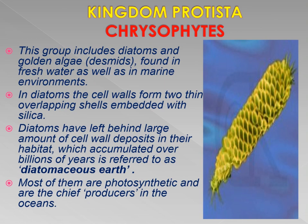The first type is chrysophytes, which is a group of organisms that includes diatoms and golden algae. They are found in fresh water as well as marine environments. In diatoms, the cell walls form two thin overlapping shells embedded with silica. Diatoms have left behind large amounts of silica deposits in their habitat, accumulated over millions of years, and this is referred to as diatomaceous earth — a very important term.